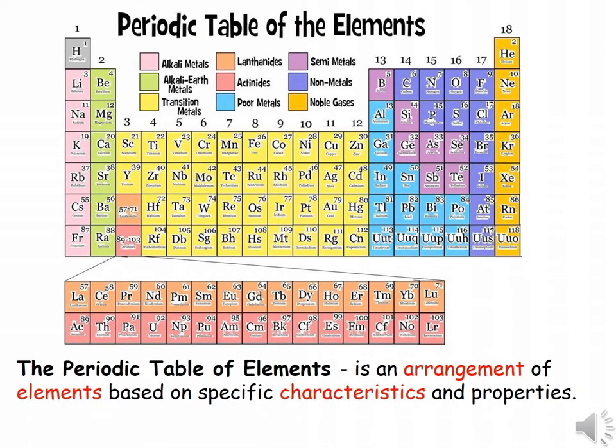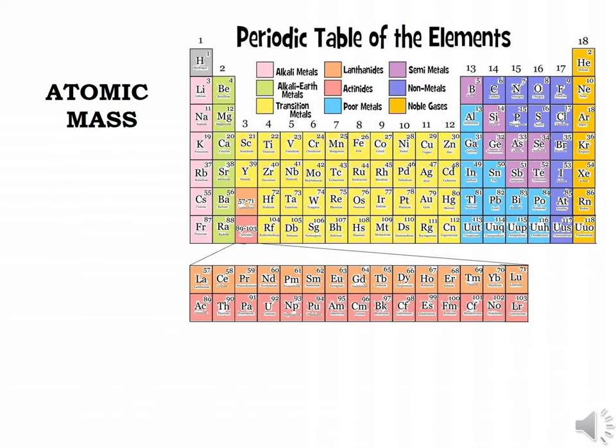The periodic table of elements is an arrangement of elements based on specific characteristics and properties, being organized according to atomic mass.